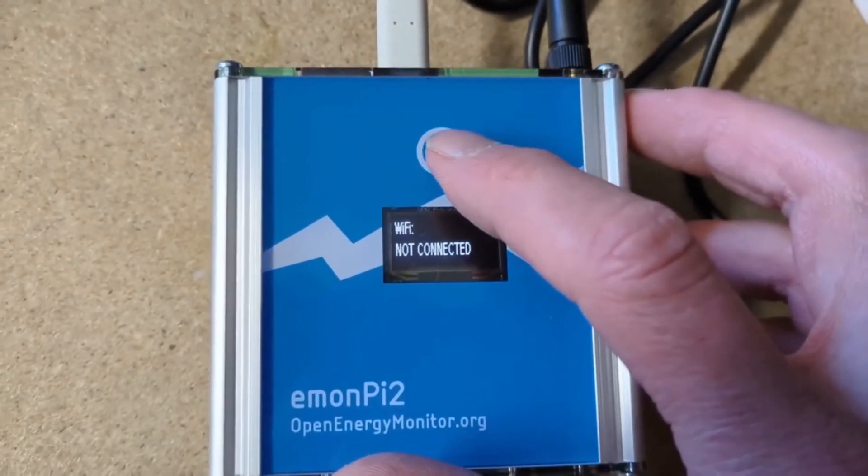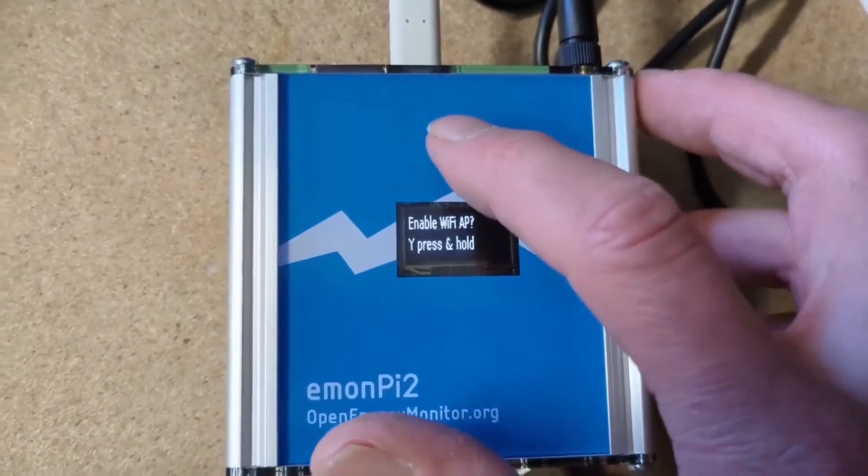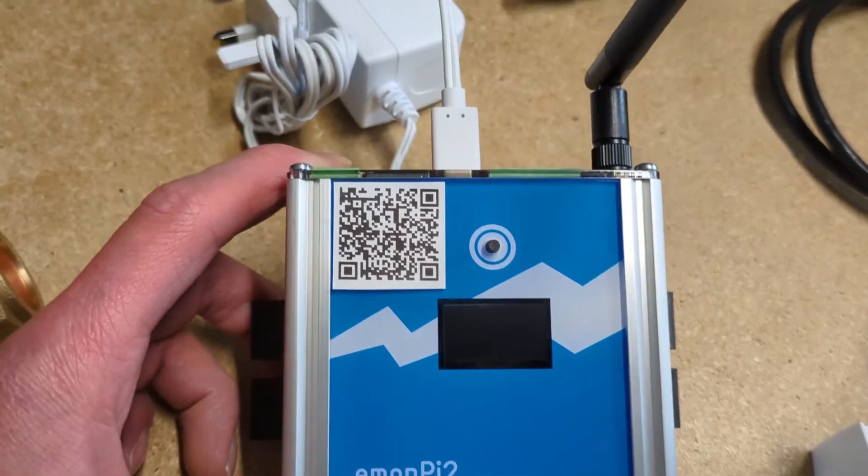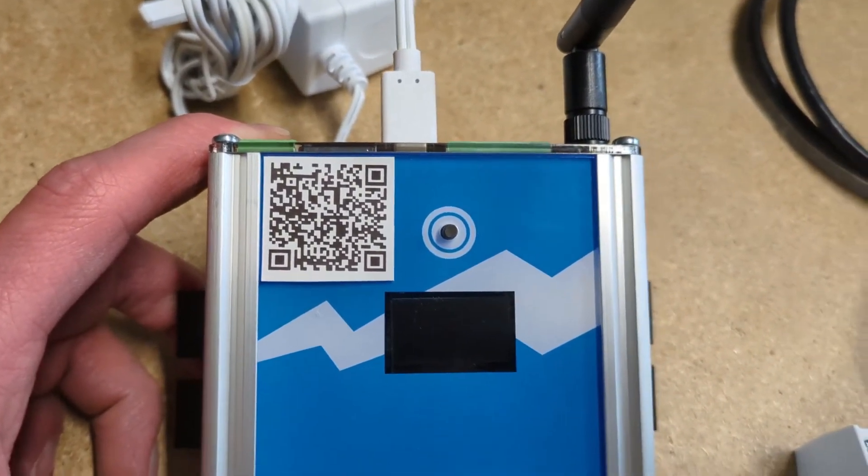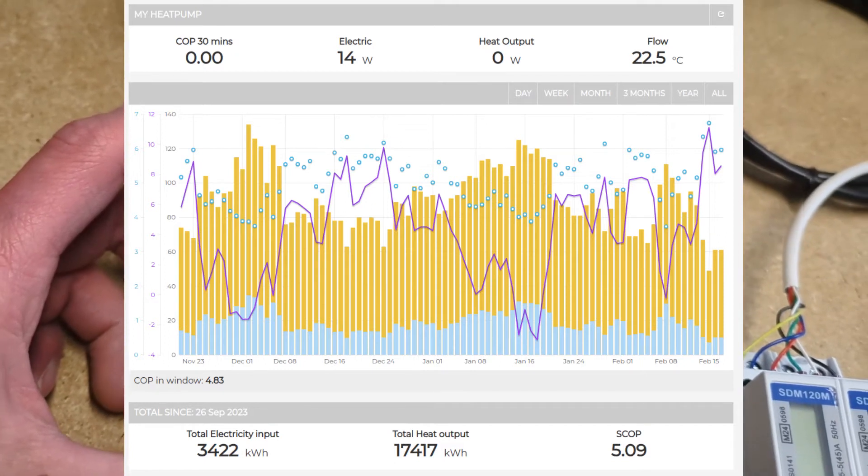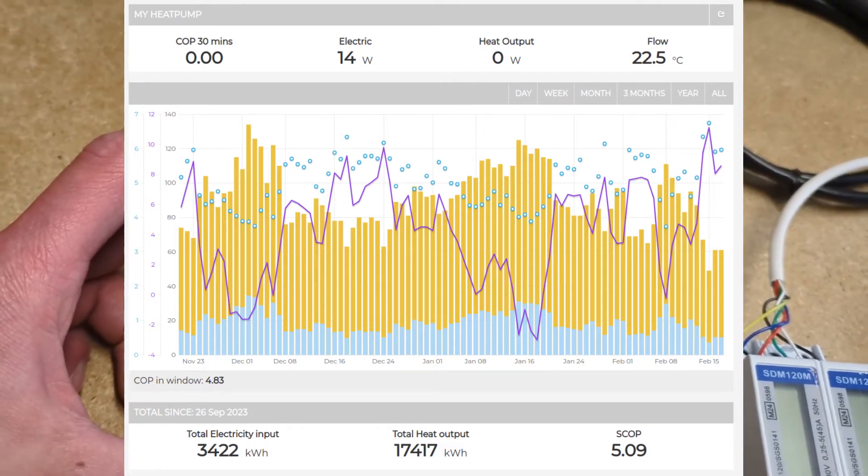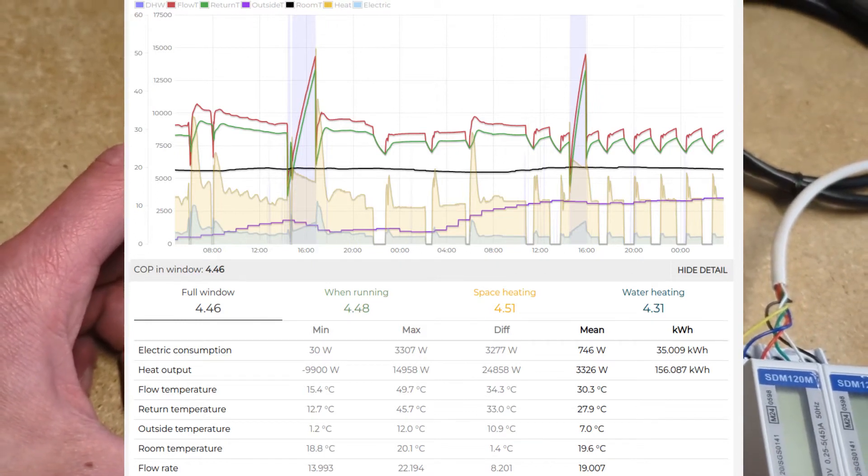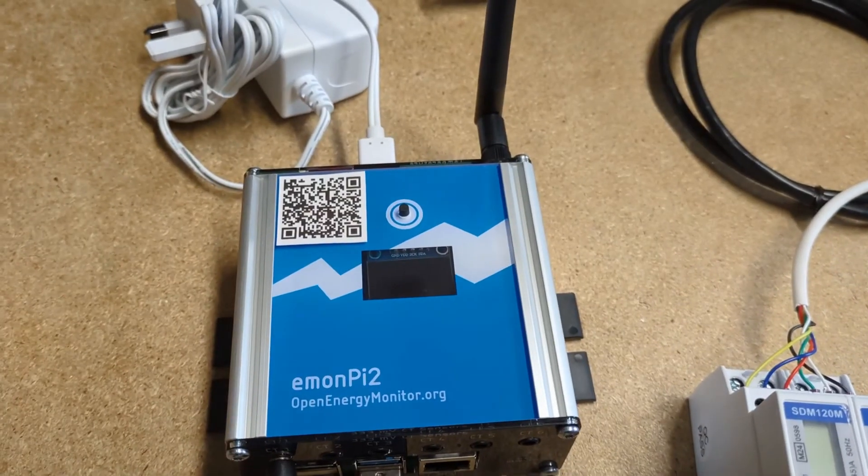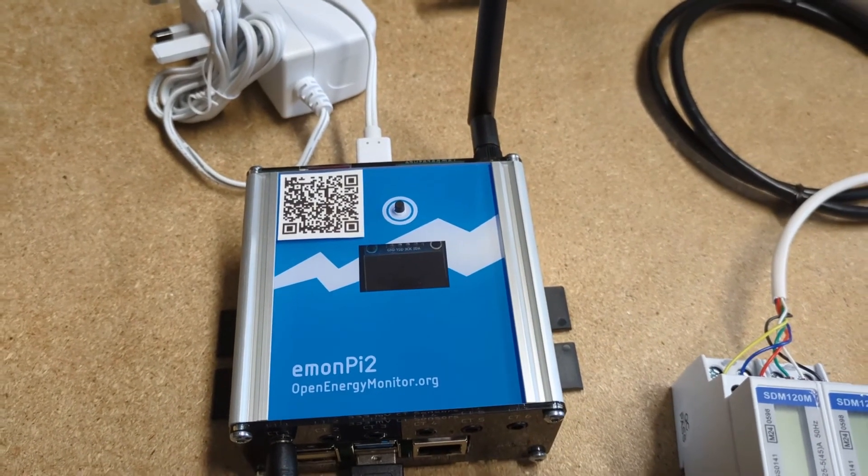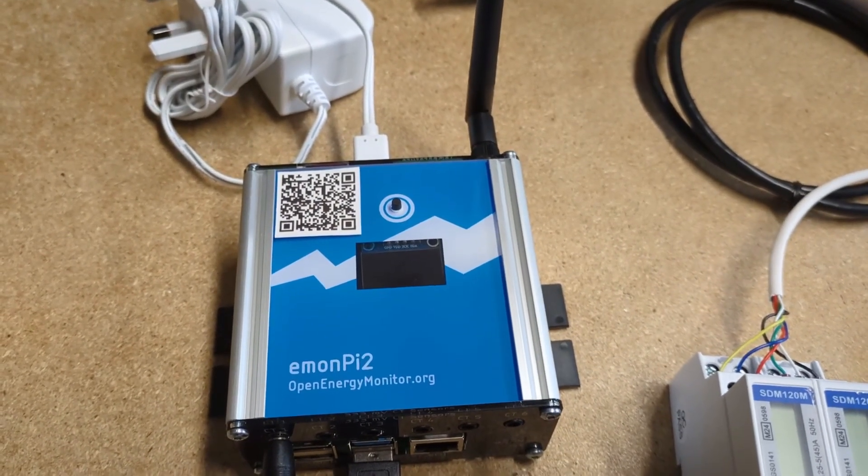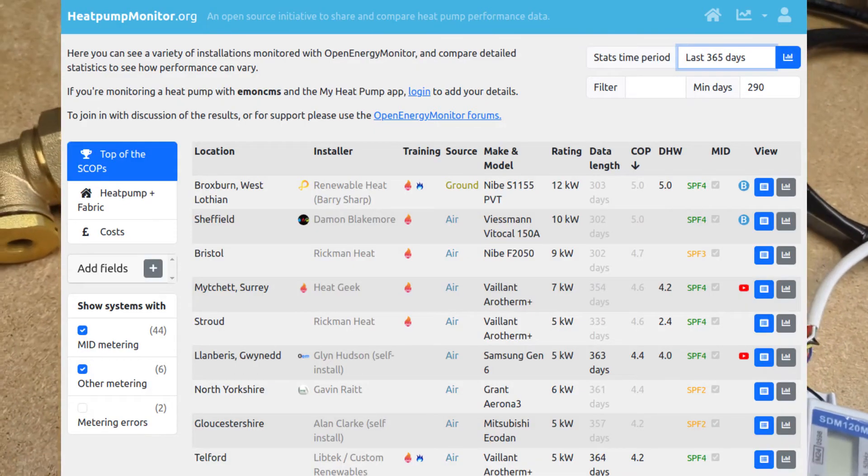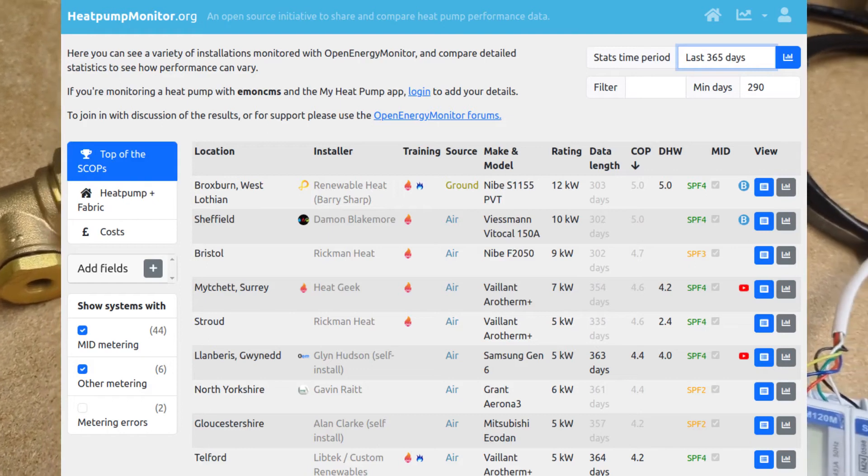The screen is also useful for checking to see if the internet is connected. The ethernet cable is currently not connected, and the Wi-Fi is not connected on here. Once the system is powered up and connected to the internet, you can scan the QR code there. That'll take you to a direct access URL to view the data. Or you can log in to emontcms.org with the username that was provided when the kit was ordered. Once you're happy that all data is coming through well, you can then optionally choose to submit the data to heatpumpmonitor.org site.